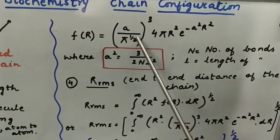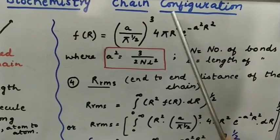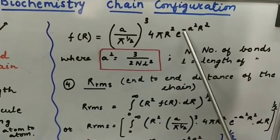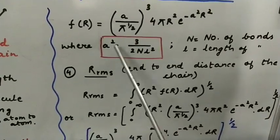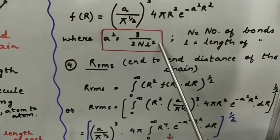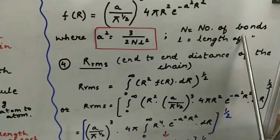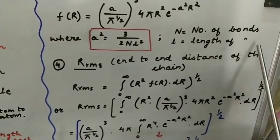Now we move towards this Fr. We have to calculate this Fr and for this you should know there is a standard formula of Fr. That is A upon pi to the power half to the power 3, 4πr² e to the power minus A²r². Where A is a constant that is known as 3 upon 2NL². Here N is number of bonds and L is length of that bond.